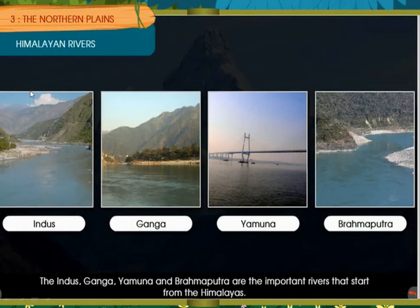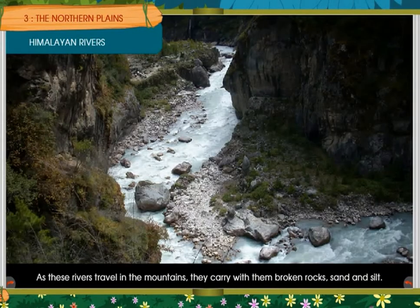The Indus, Ganga, Yamuna and Brahmaputra are the important rivers that start from the Himalayas. These rivers travel through the mountains and carry with them broken rocks, sand and silt.